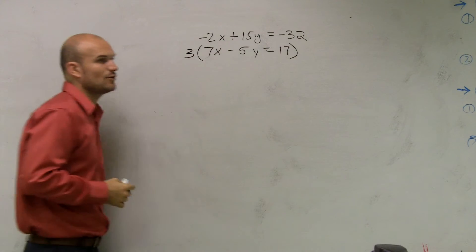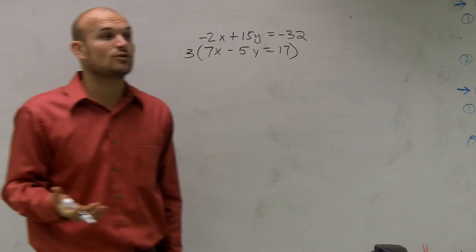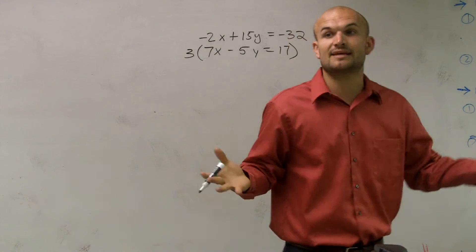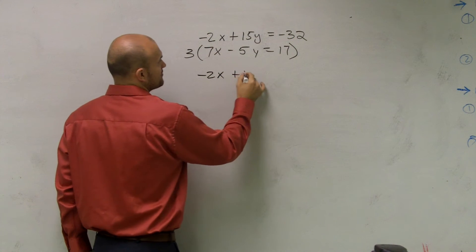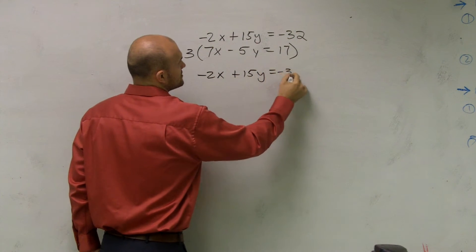I multiply the bottom equation by 3. Remember, it's an equation, so you have to multiply everything times 3. Therefore, I rewrite the top again. Negative 2x plus 15y equals negative 32.